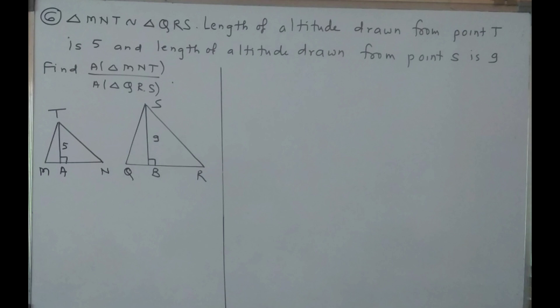Question number 6. Triangle MNT is similar to triangle QRS. The length of altitude drawn from point T is 5 and length of altitude drawn from point S is 9. Here we have given two similar triangles MNT and QRS. You are asked to find area of triangle MNT upon area of triangle QRS. We know that if triangles are similar, ratio of areas of similar triangles is equal to ratio of their corresponding sides squared. But here corresponding sides are not given — instead, altitudes are given. So first we will prove the relation between corresponding sides and altitudes by considering triangle MAT and triangle QBS and proving they are similar.